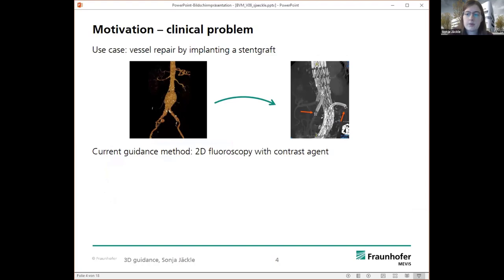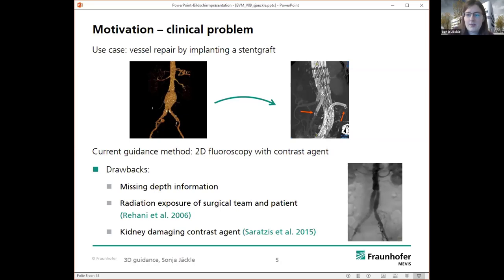And currently in those procedures, the guidance method, the gold standard for navigating instruments is two-dimensional fluoroscopy with contrast agent, and this method has several drawbacks, so the first one is maybe very obvious, so it's two-dimensional, so the third dimension is missing, so we have images like here on the right side, and you don't know anything about the depth information, and this makes the navigation and the guidance very challenging.